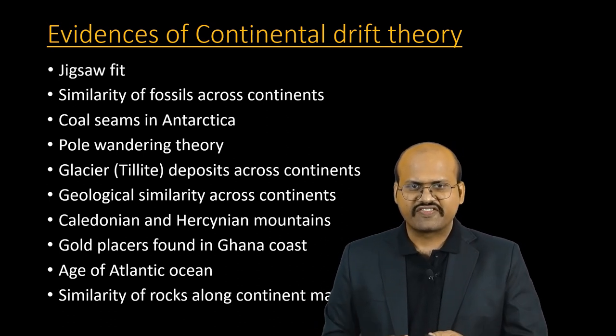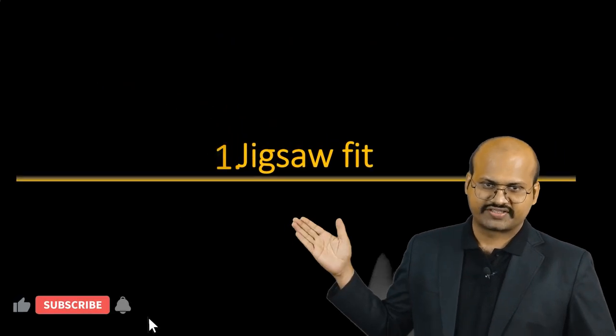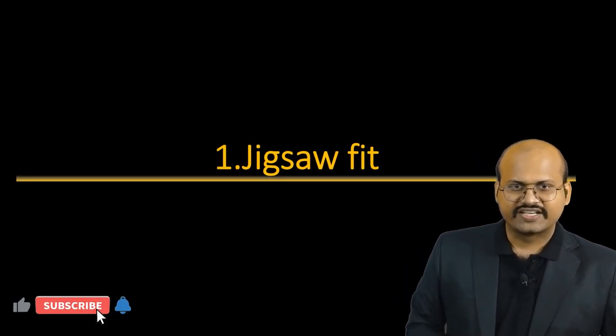The first evidence is Jigsaw Fit of Continents. We have all played with a Jigsaw Puzzle where small pieces are combined to form large figures. Wegener thought that just like a Jigsaw Puzzle, our continents are pieces of large land blocks, and we can arrange the continents together to form a single large continuous supercontinent.